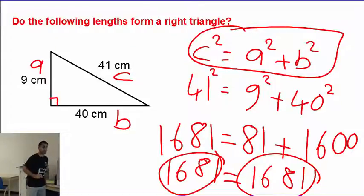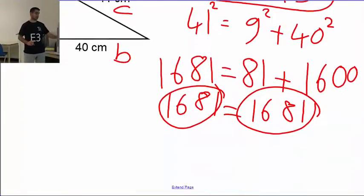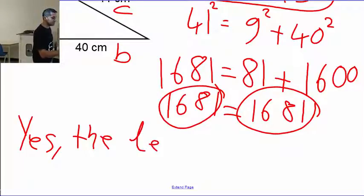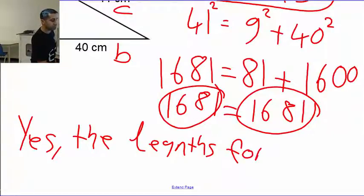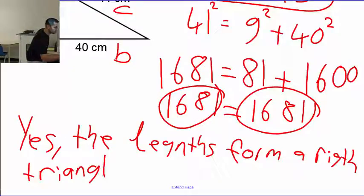Now, if I like to, I can do that on my own. But this is a word question. Do the following lengths form a right triangle? I want to say yes. The lengths form a right triangle. Done.